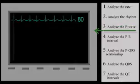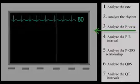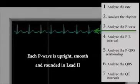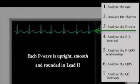Step 3. Analyze the P wave. In normal sinus rhythm, each P wave is upright, smooth, and rounded in lead two.